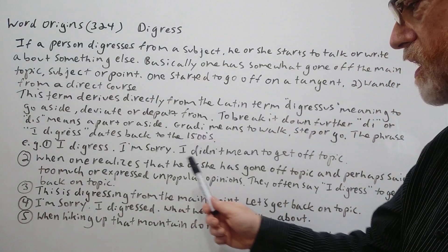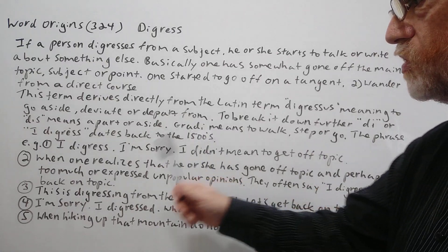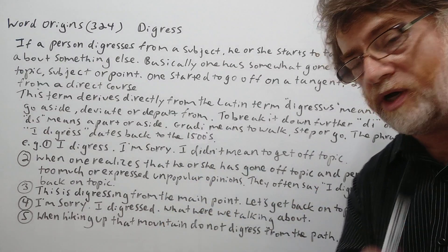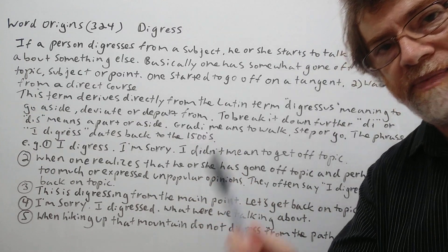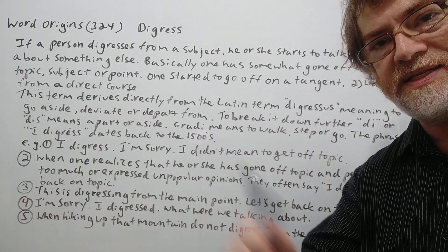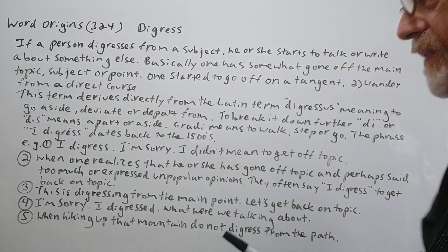Number two. When one realizes that he or she has gone off topic and perhaps said too much or expressed unpopular opinions, they often say 'I digress' to get back on topic. So right after they say 'I digress,' they're saying all right, let's get back to the main topic again.